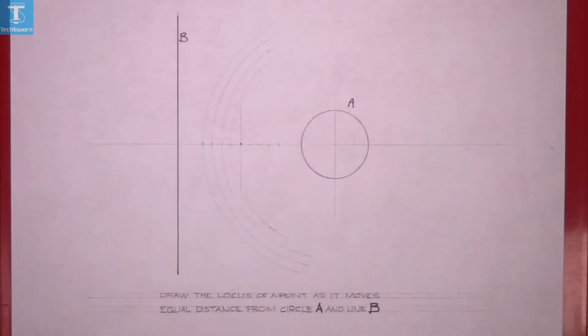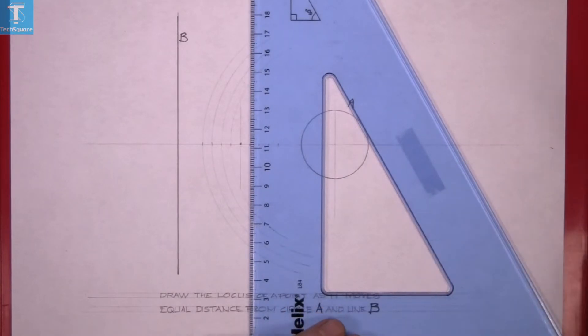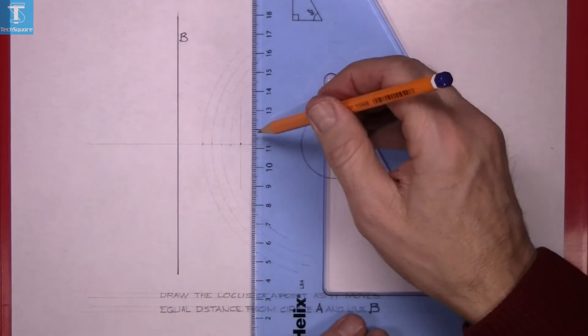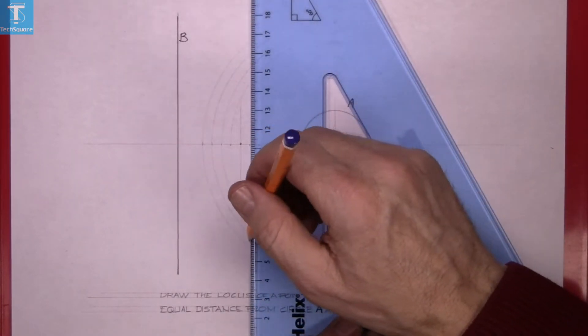Now on the other side, because B is a line, we have to go parallel to the line. So we draw vertical lines through the points.